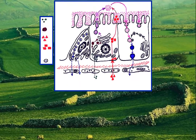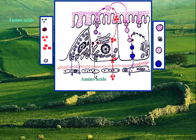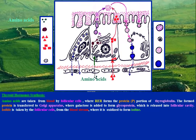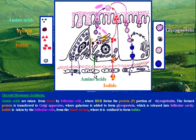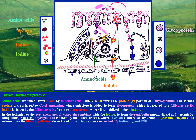Thyroid hormone synthesis: amino acids are taken from the blood by follicular cells, where the rough endoplasmic reticulum forms the protein portion of thyroglobulin. The formed protein is transferred to the Golgi apparatus, where galactose is added to form glycoprotein, which is released into the follicular cavity. Iodide is taken by follicular cells from the blood stream, where it is oxidized to form iodine. In the follicular cavity, extracellularly, the glycoprotein combines with the iodine to form thyroglobulin — mono-, di-, tri-, and tetra-iodo compounds.